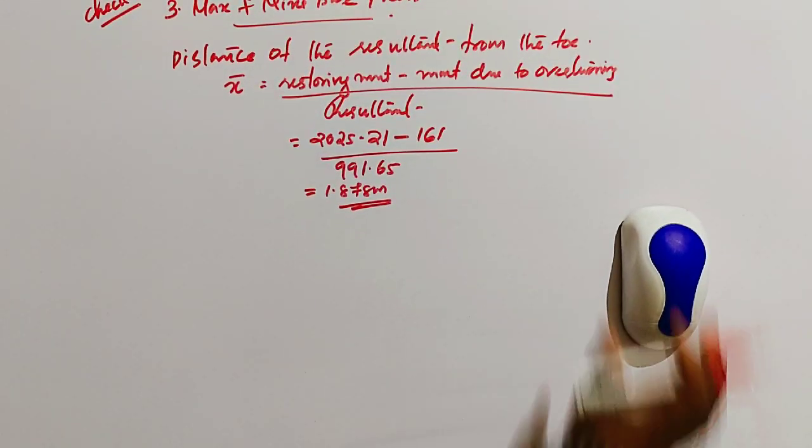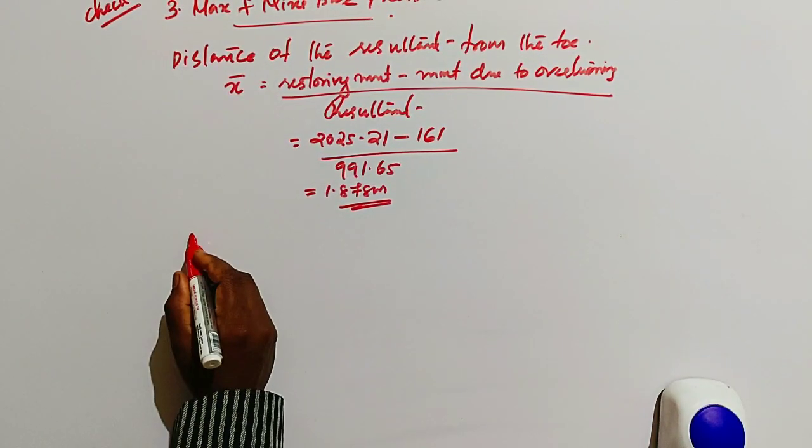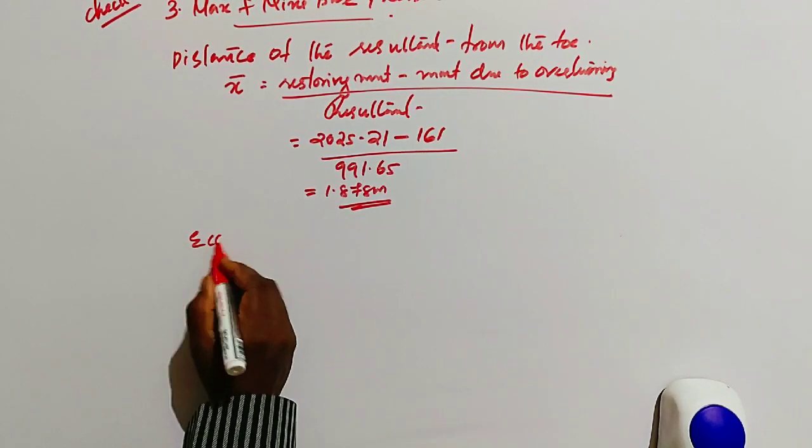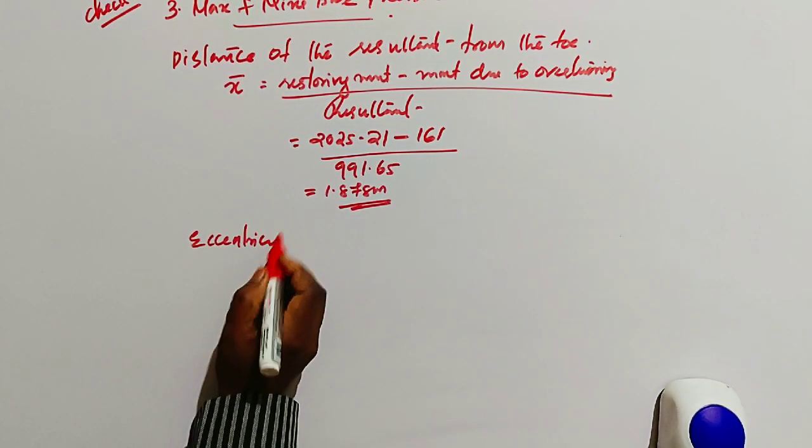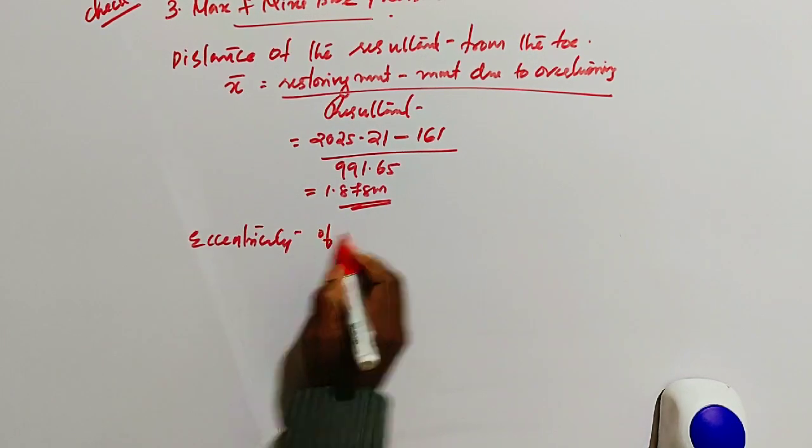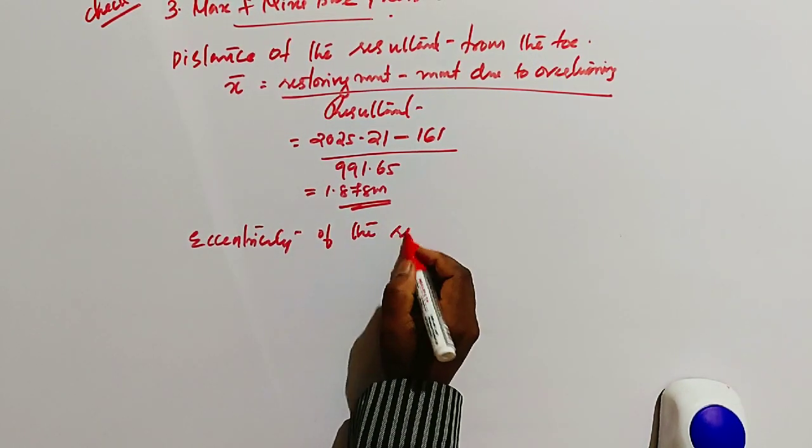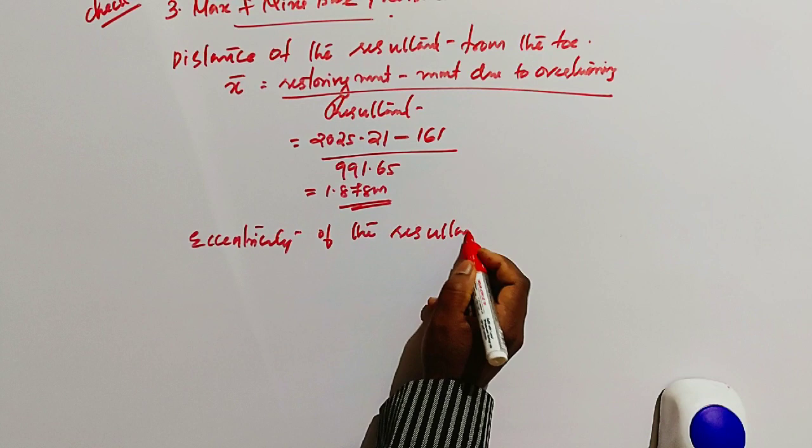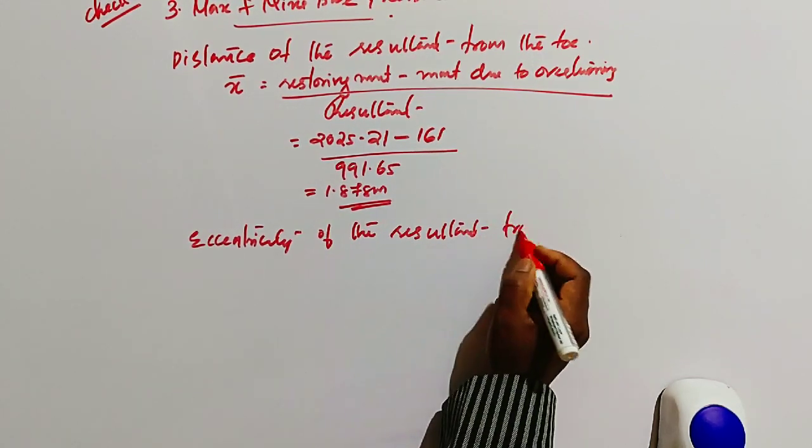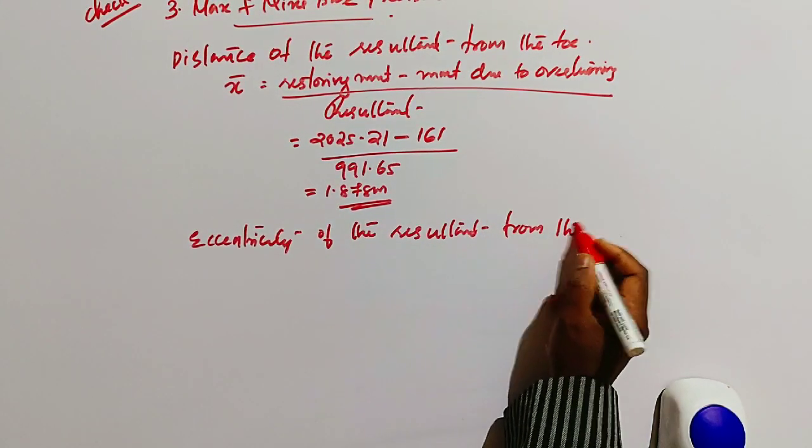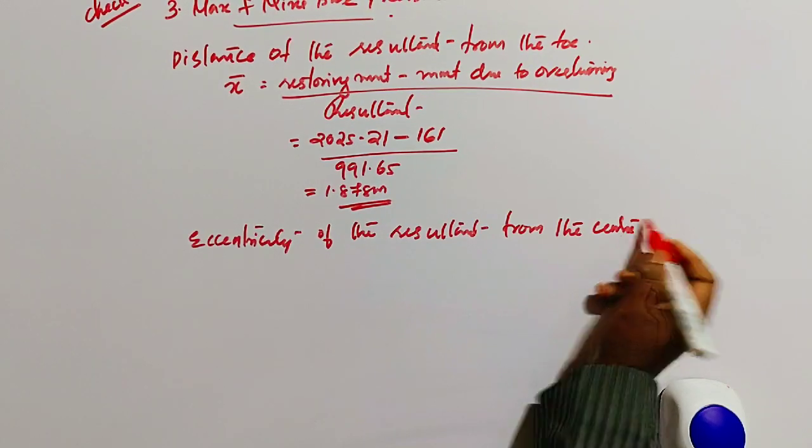Then comes to the eccentricity. The eccentricity of the resultant corresponding to this position should be less than B by 6, where B is the base width of the abutment. Then eccentricity is denoted by E.